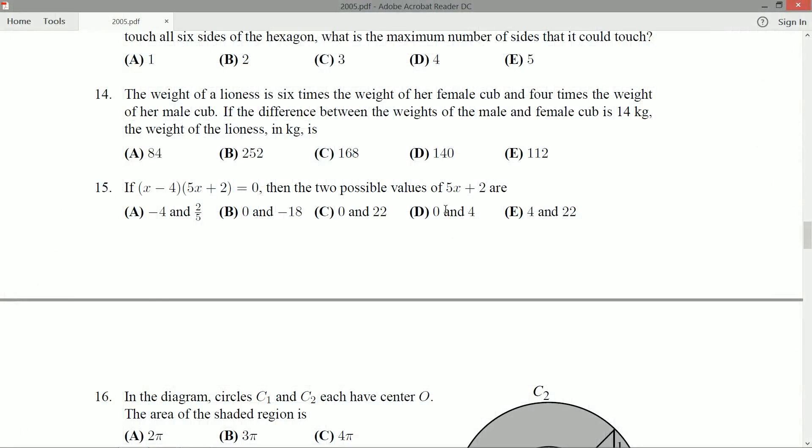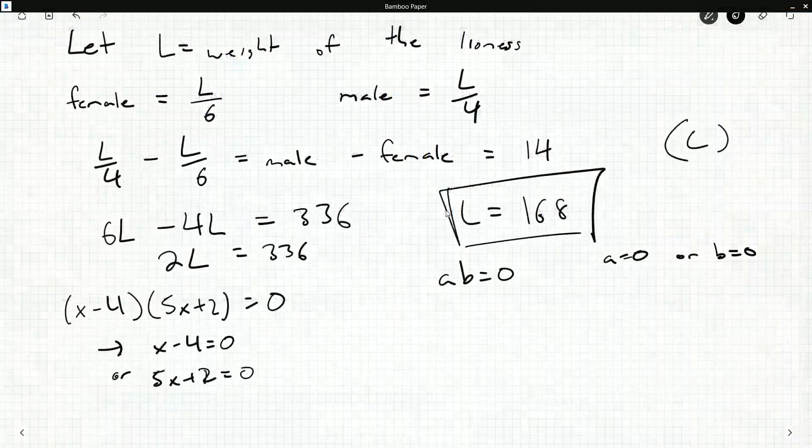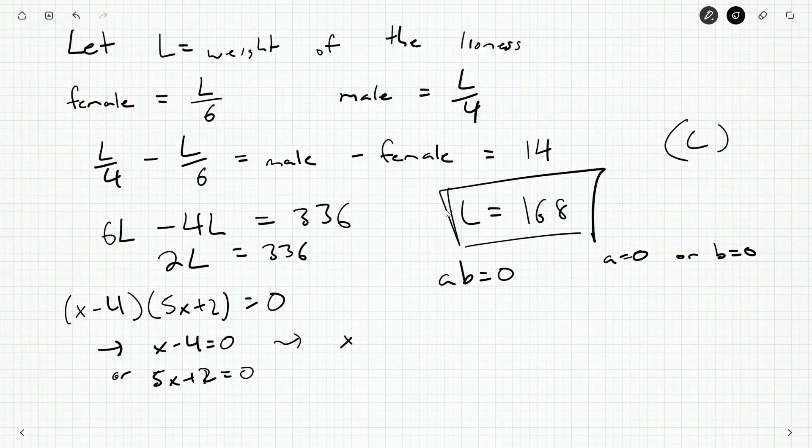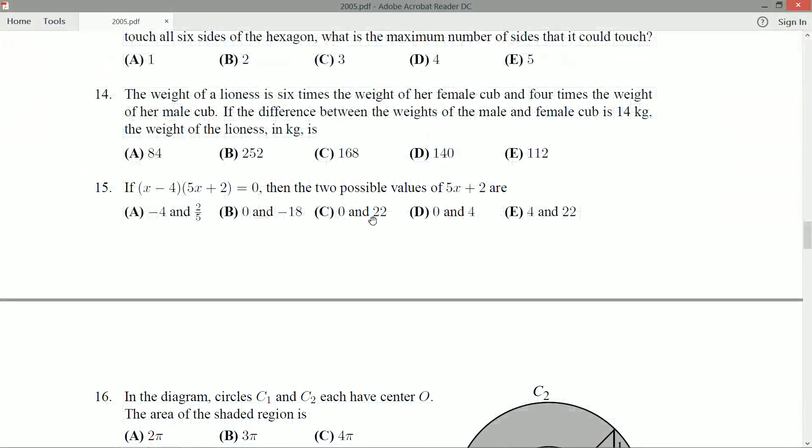Okay. So that's all well and good. So 0 is one of them. And now this one here, x-4 equals 0. That's just x equals 4. So in this case, 5x+2 is 5 times 4 plus 2, 22. So 22 and 0 are the two possible values. And that's c right in the middle.